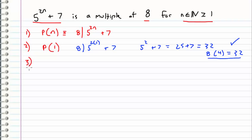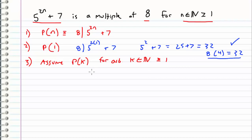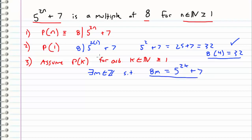The next thing we want to do in a proof by induction is assume that P of k is true for an arbitrary integer k such that k is greater than or equal to 1. When we assume this is true, basically what we are saying is that there exists an integer m such that 8 times m is equal to 5 to the 2k plus 7. This is a direct result of assuming P of k is true — if P of k is true, then 8 divides 5 to the 2k plus 7, so we can write it out like this for an arbitrary integer m.